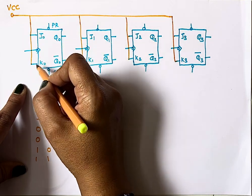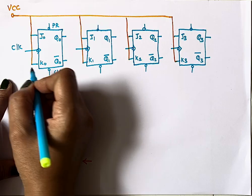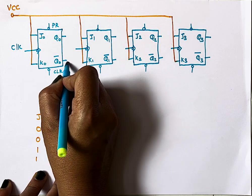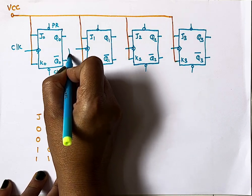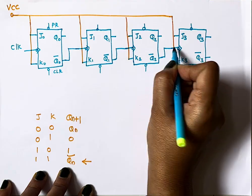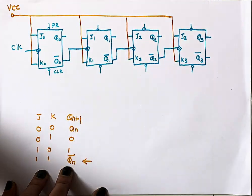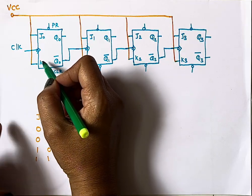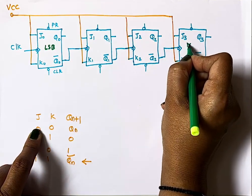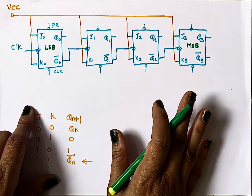The clock is connected to only one flip-flop. Since this is a down counter, Q0-bar is connected as the clock to the second flip-flop, Q1-bar to the third, and Q2-bar to the fourth. The flip-flop receiving the external clock generates the least significant bit, and the last flip-flop generates the most significant bit.